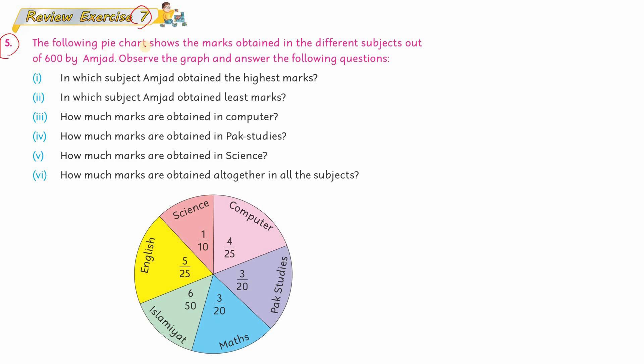The following pie chart shows the marks obtained in different subjects out of 600 by Amjad. Amjad is a student who has obtained 600 marks total, shown to you below in pie chart form. Observe the graph and answer the following questions. The graph and questions are both in front of you, and you need to provide simple answers.